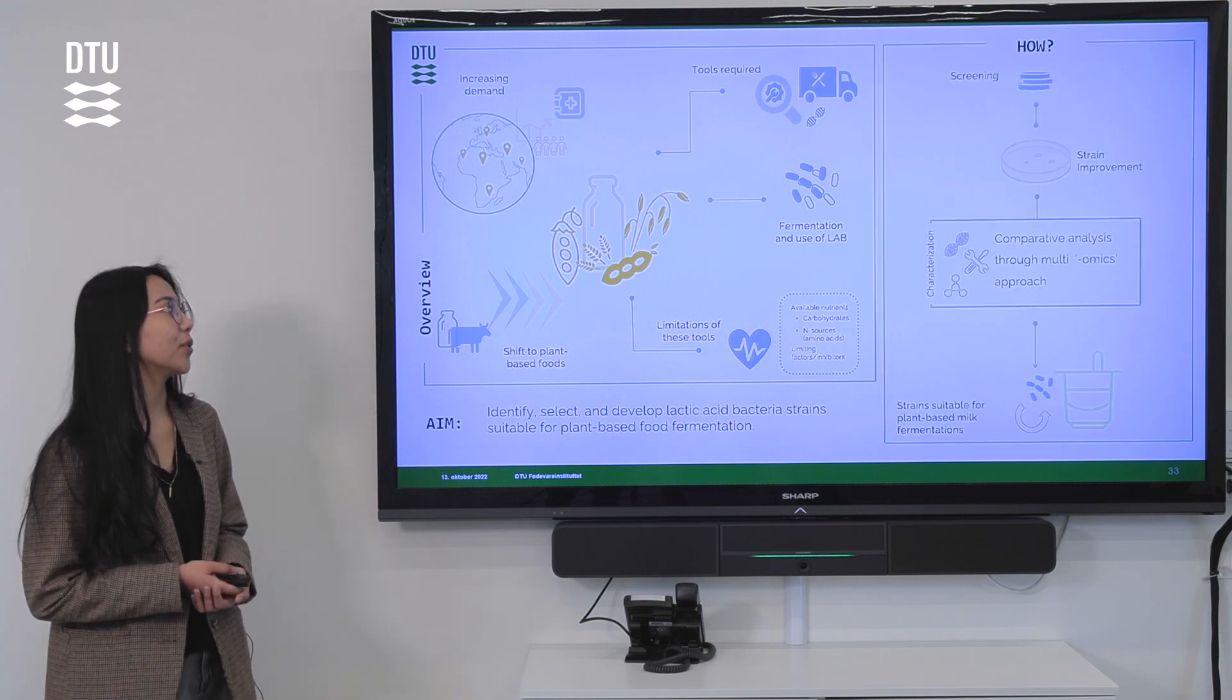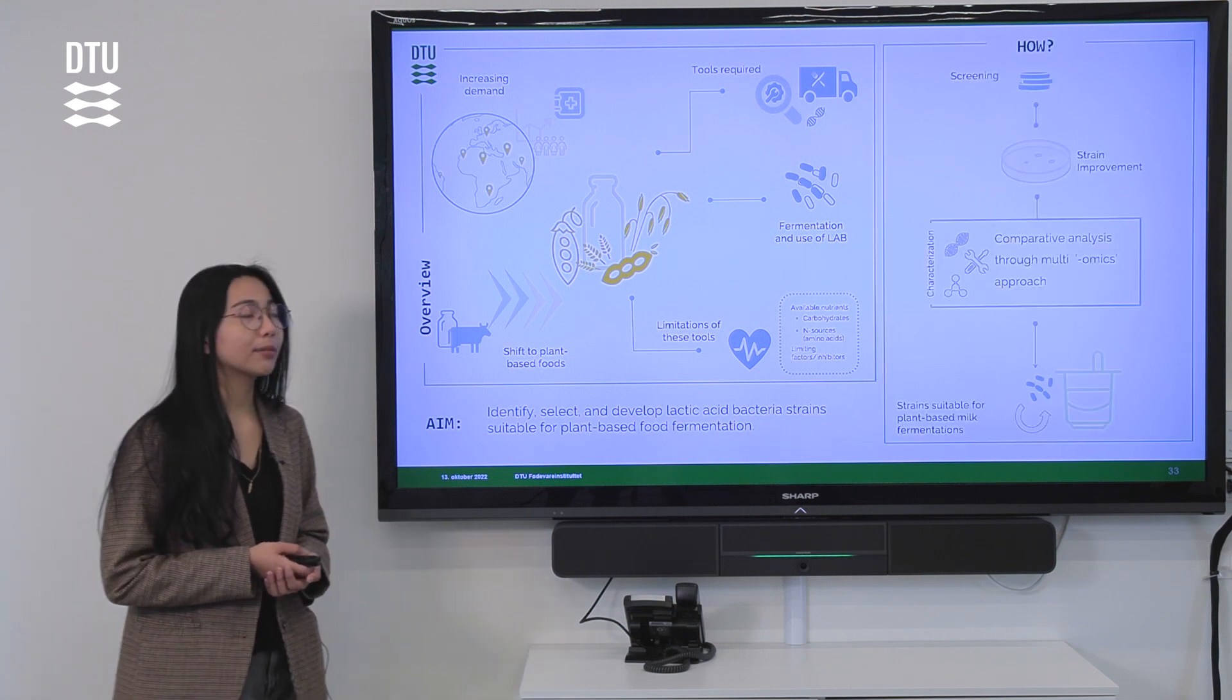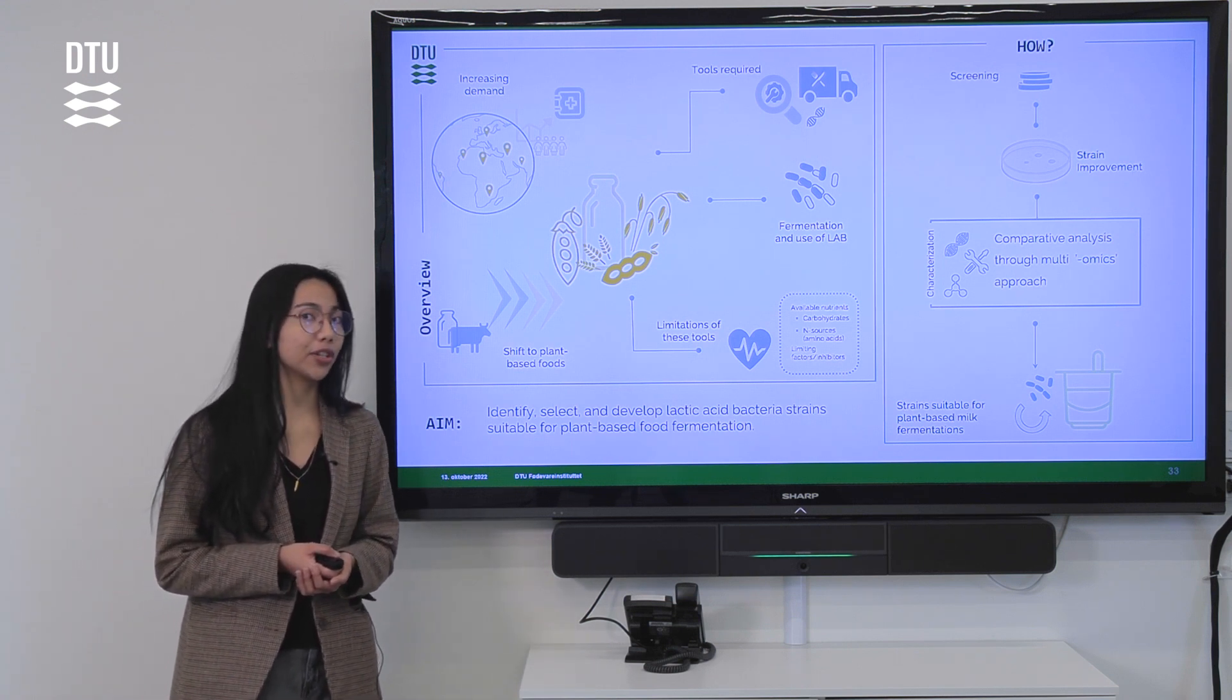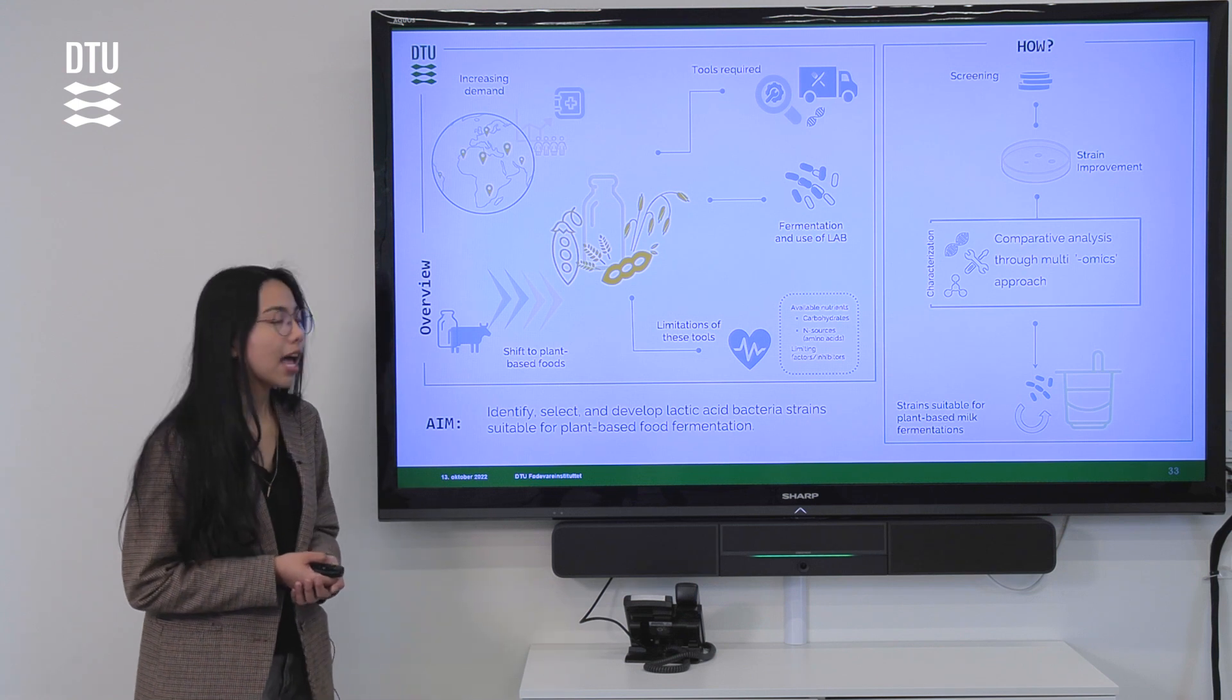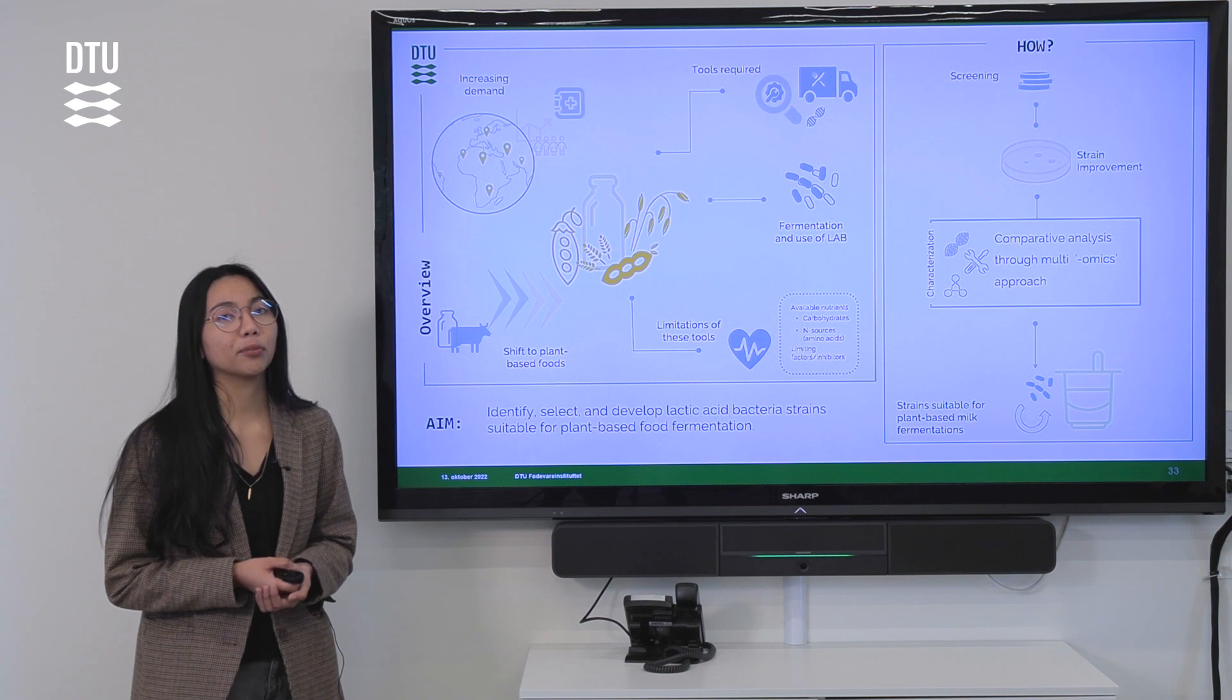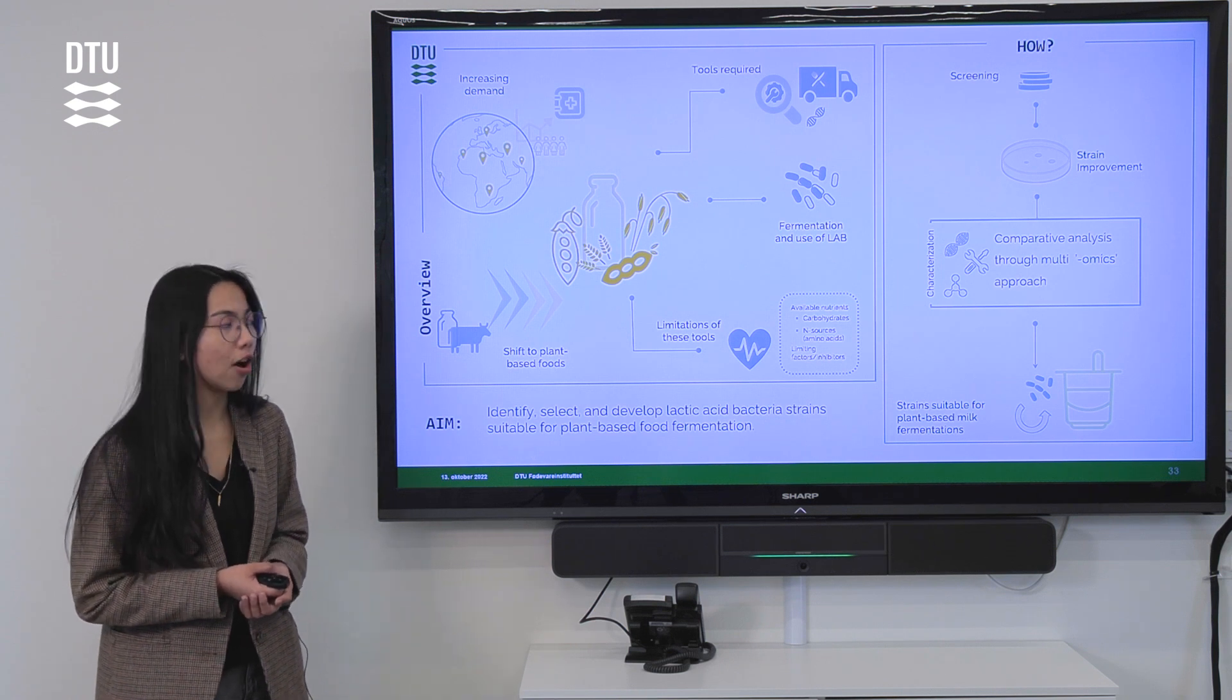So how are we going to do this? First, we aim to screen sets of microorganisms from various collections between DTU and IFF and improve these selected strains to be much more adaptable to these plant-based milk analogues.